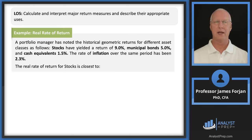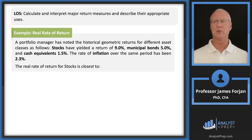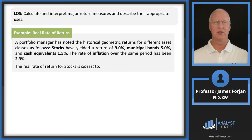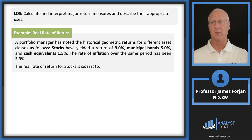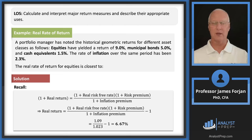Here's a likely exam question: compute the real rate of return. Historical geometric returns: stocks 9%, municipal bonds 5%, cash equivalents 1.5%, inflation rate 2.3%. For stocks: (1 + 0.09) / (1 + 0.023) − 1 = 6.67% real return. We ignore the municipal bond and cash yields here and focus on the 9% stock return. The equity return of 9% has already incorporated the risk-free component and risk premium from the building blocks model.